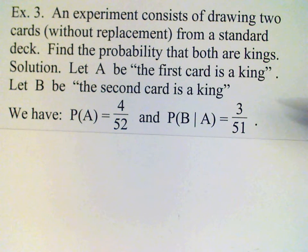There are only three kings left in the deck—that's where this three comes from—and there are only 51 cards left to pick from. That's where we come up with this conditional probability.